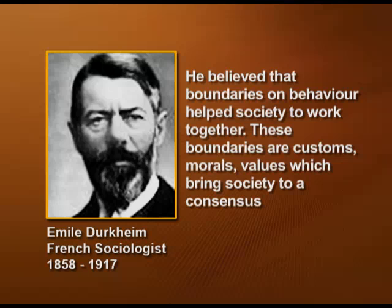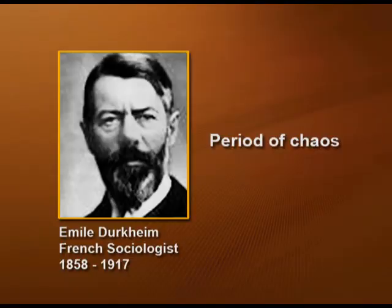Durkheim says that there comes a time in society when these boundaries break. This intervening period — when one value is discarded but the new values are not yet in place — he called this a period of chaos. He said this period could be brief or it could be a long period. What Durkheim talks about sociology is that it is the science of social institutions and social structure.